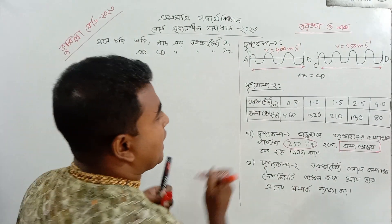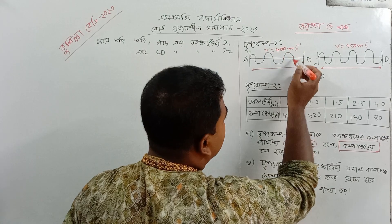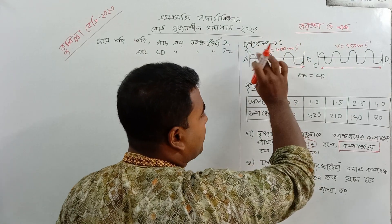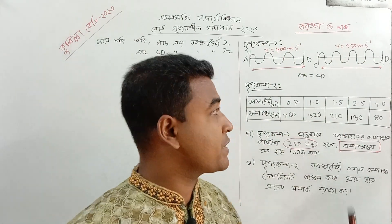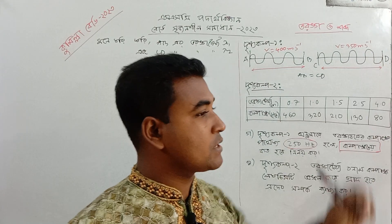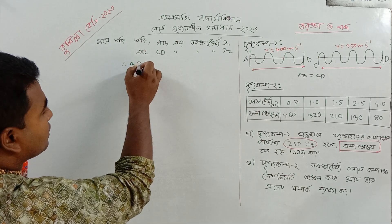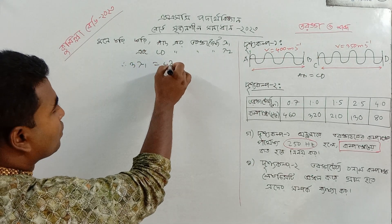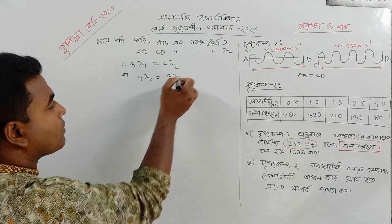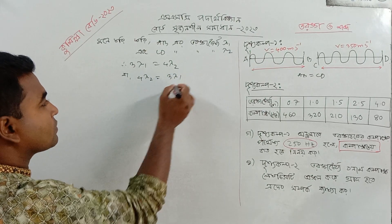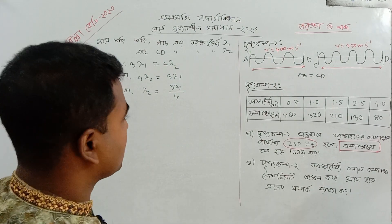The second beta is 4; choosing the first beta is 4. This is equal to 4 — lambda 2, lambda 3, lambda 2, lambda 3, lambda 2, lambda 3, lambda 3, lambda 1 — by 4. Okay.